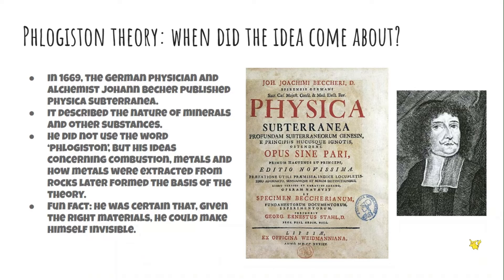So what is phlogiston theory and when did the idea come about? In 1669, the German physician and alchemist Johann Becher published a book called Physica Subterranea. It described the nature of minerals and other substances. As a fun fact, Becher also claimed that given the right materials he could make himself invisible. In this book he described minerals and substances, and though he did not use the word phlogiston, his ideas on combustion and metal extraction later formed the basis of the theory.